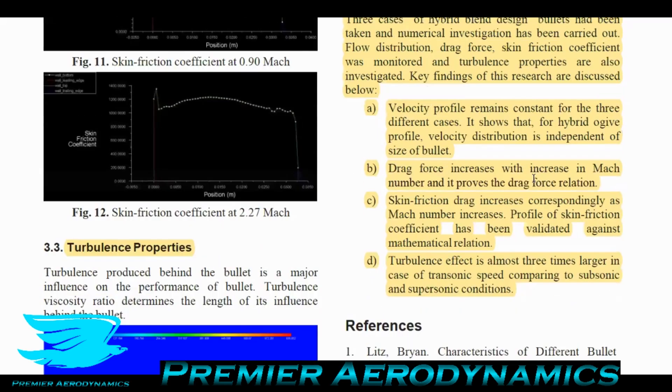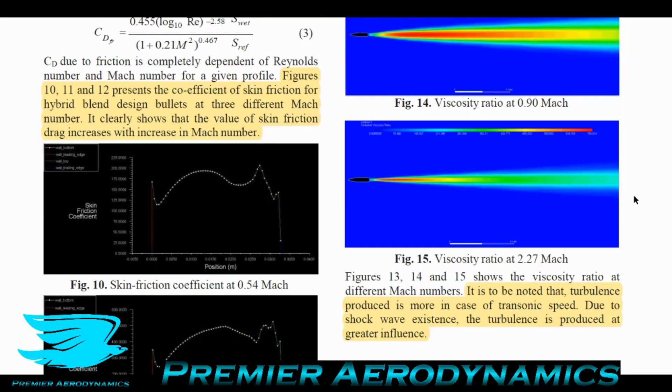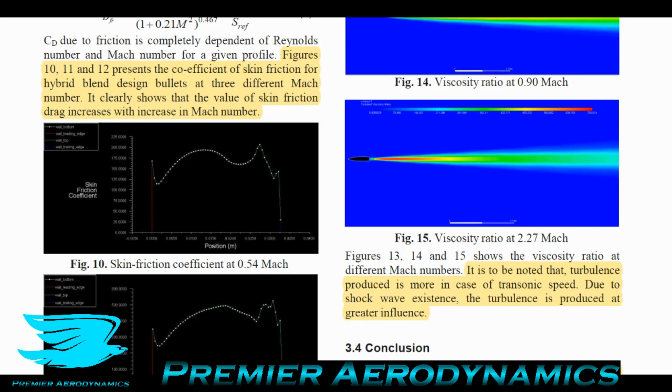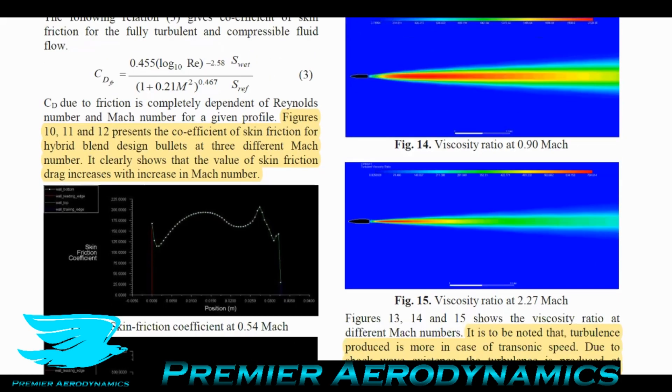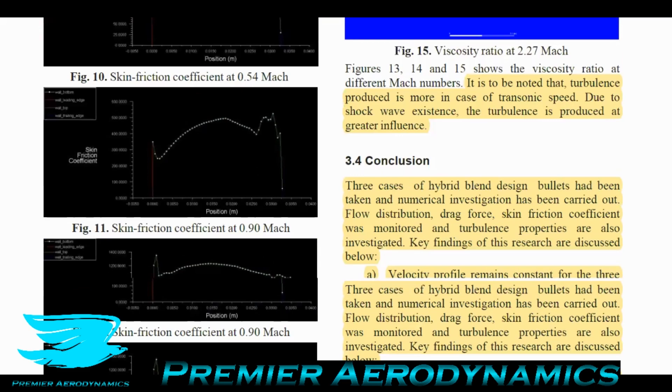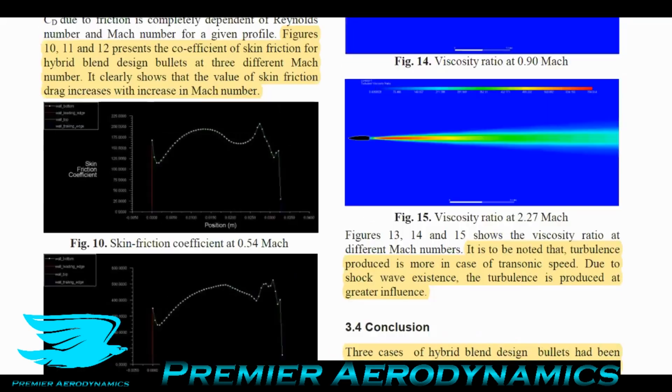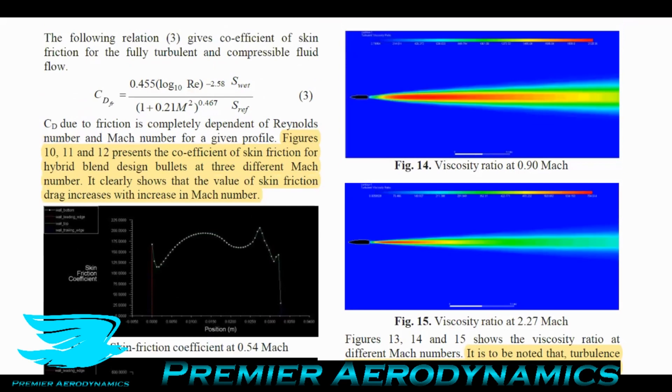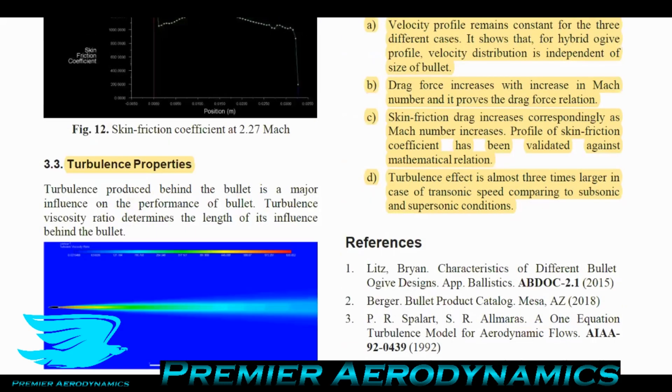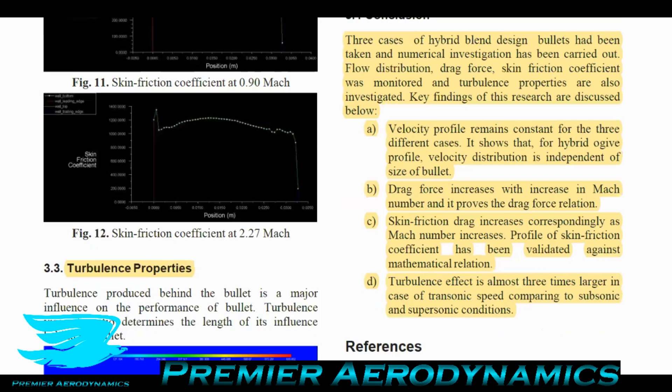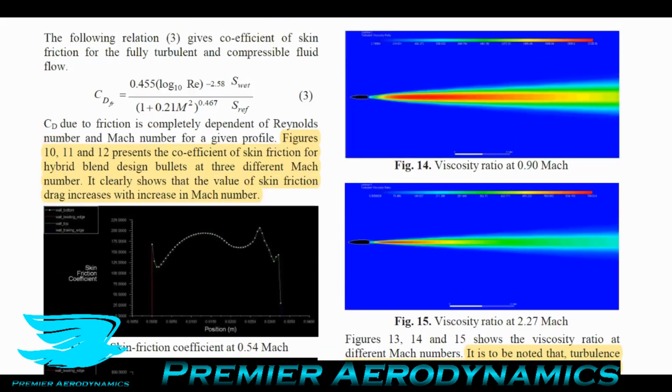They looked at turbulence properties. It should be noted that turbulence produced is more in case of transonic speed. Due to shockwave existence, turbulence has greater influence. At supersonic Mach 2.27 and subsonic 0.54 there's not nearly as much turbulence as at transonic flow. Trying to punch through the transonic region is more difficult. Once you get past that it becomes easier to fly. The wake behind bullets is much greater for transonic than the other two - it's two or three times the width.